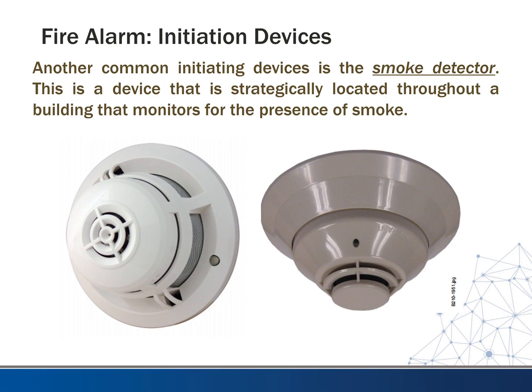The next device is a smoke detector, which you've probably seen in numerous buildings. This is a device we strategically locate throughout a building to monitor for the presence of smoke. The most common place we are legally required to put them is in the path of egress, because we want to make sure that path stays clear. If anything starts to obstruct it, we want to notify the fire alarm and the fire department immediately.